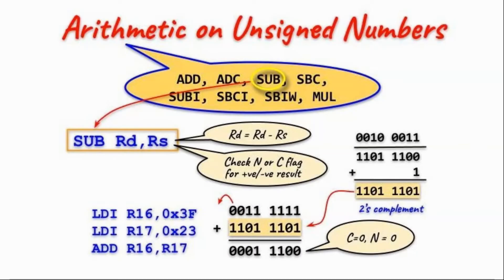This next instruction is the subtract instruction, and this is the syntax. We have destination minus source, and the result goes into the destination. We can check flags N or C to see whether we have a positive or negative number. For a positive number, the N flag will be zero, and it will be one for negative numbers. For the C flag, after each subtraction, the value is inverted.